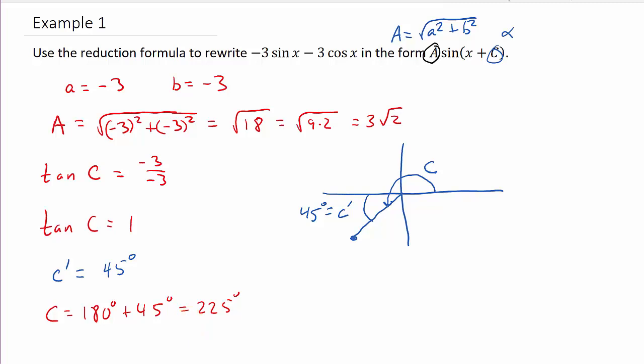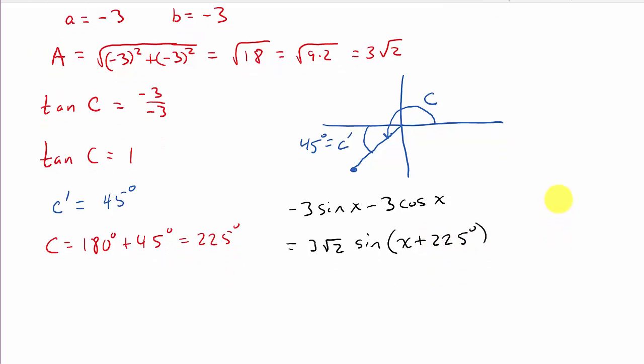So, now, I have negative three sine x minus three cosine x is equal to A. And in this case, A is three square roots of two times the sine of x plus c. And that's 225 degrees.